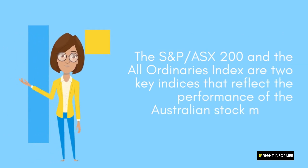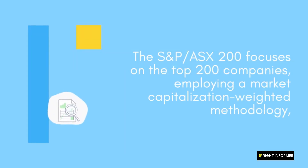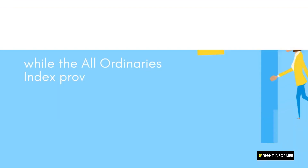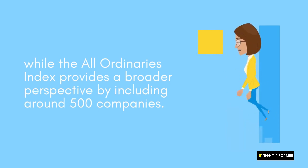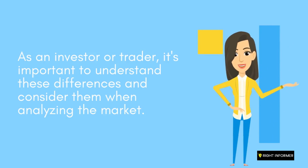Conclusion: The S&P/ASX 200 and the All Ordinaries Index are two key indices that reflect the performance of the Australian stock market. The S&P/ASX 200 focuses on the top 200 companies, employing a market capitalization-weighted methodology. While the All Ordinaries Index provides a broader perspective by including around 500 companies, both indices have their significance and play a crucial role in tracking the performance of the Australian stock market. As an investor or trader, it's important to understand these differences and consider them when analyzing the market.